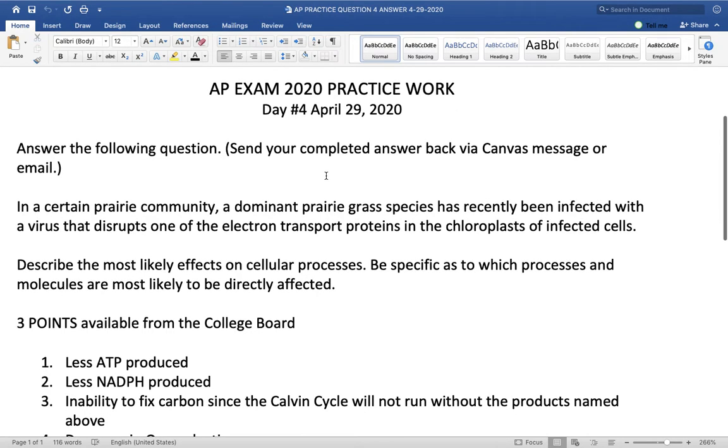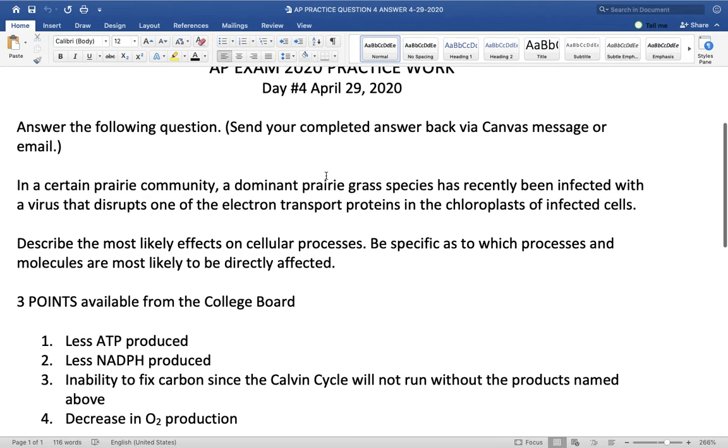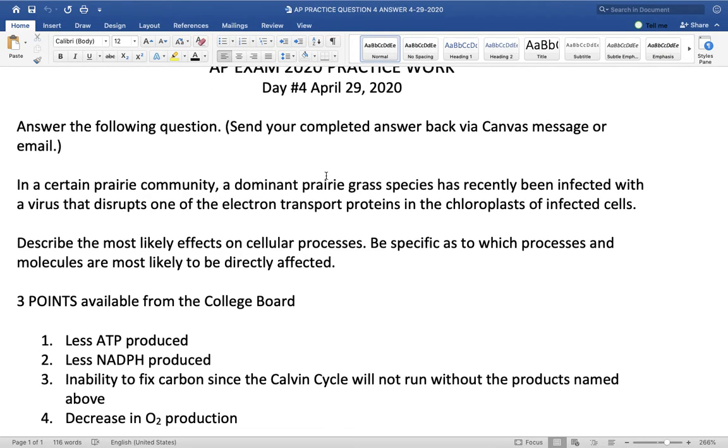And that would be your third point. You would not be able to fix carbon out of the air since the Calvin cycle will not run. Because if the Calvin cycle can't get ATP and the Calvin cycle can't get NADPH, carbon will not be fixed. Hence, you would not be able to make the end sugar, glucose or whatever, in the Calvin cycle. And then you could have a fourth point where you would say the plant, the cells, would not make as much oxygen from this virus.